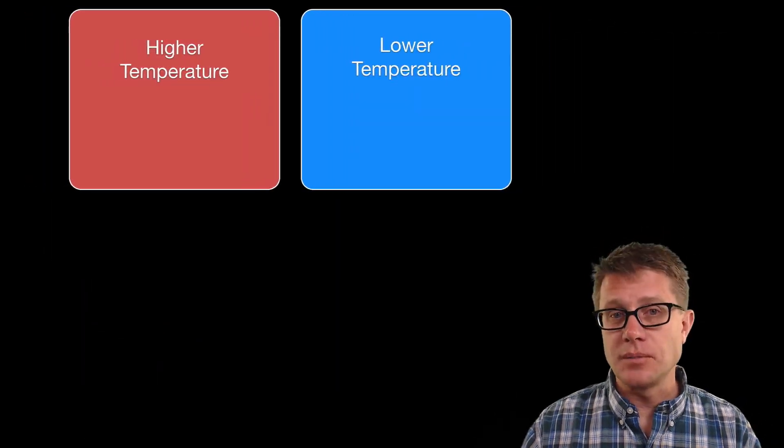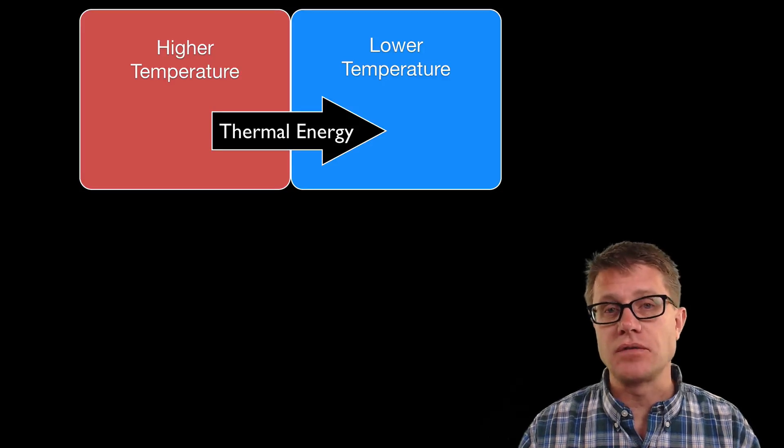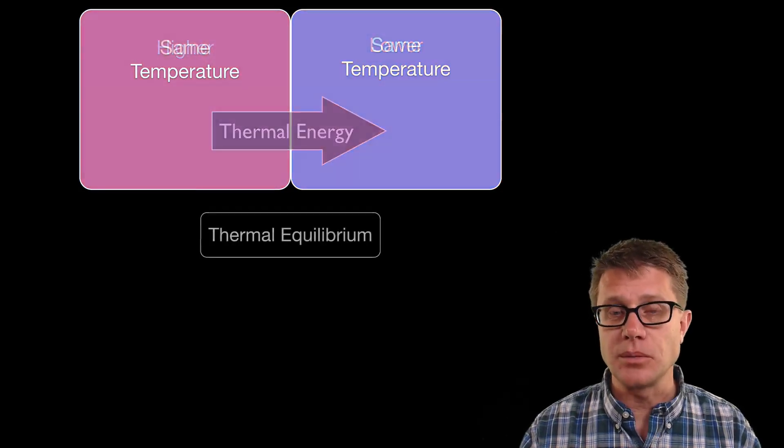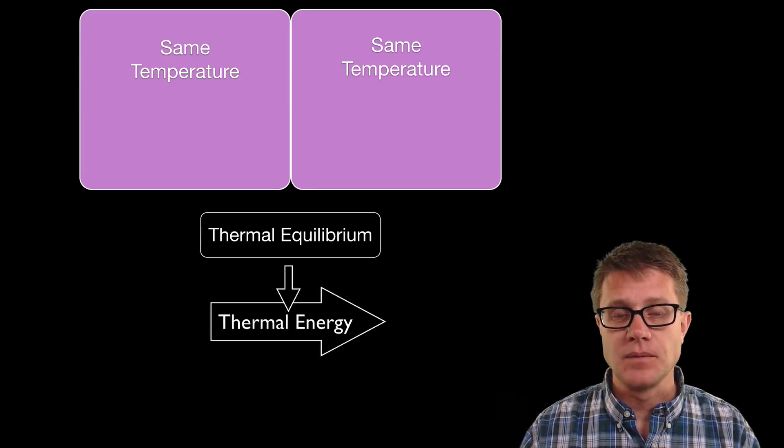If you have two objects with varying temperatures, what will happen? Thermal energy will be transferred from the higher temperature to the lower temperature, and eventually they will achieve thermal equilibrium. What does that mean? They are the same exact temperature.